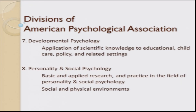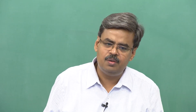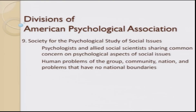The ninth division is the Society for the Psychological Study of Social Issues — an area where psychologists and allied social scientists share common concern on the psychological aspects of various social issues. Human problems of the group, community, nation, and problems that have no national boundaries are also taken care of in this division. Psychology and the arts — an interdisciplinary division encompassing visual arts, poetry, literature, music, and dance — looks at creativity, including developmental, motivational, affective, and cognitive processes, as well as the art dimension covering aesthetics, content, form, and function, including how audiences respond to art in terms of their preferences and judgments of artistic outcomes.